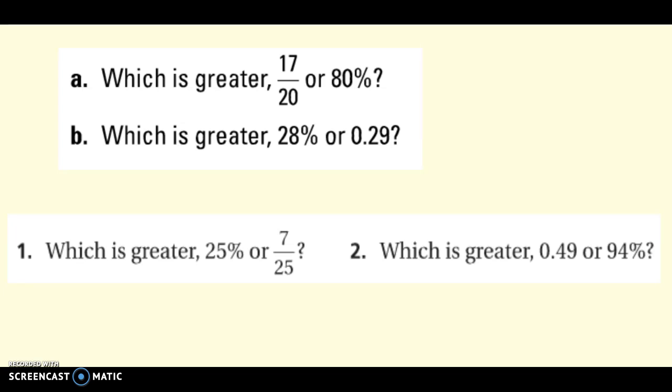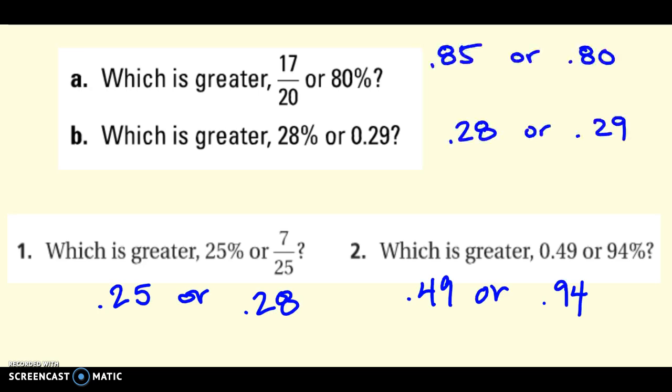Last line. Before we move on to the rest of Chapter 6, you should be able to put any fractions or decimals in order, or you should be able to just tell me which is bigger. If I give you any fractions, decimals, or percents. Do these four as practice and then we'll go over them. For the first one, I turned them both into decimals. I'm comparing 0.85 or 0.80. Well, that one's bigger. Or 0.28 or 0.29. Well, 0.29, 29 hundredths is bigger than 28 hundredths. Or 0.25 or 0.28. 0.28 is bigger.